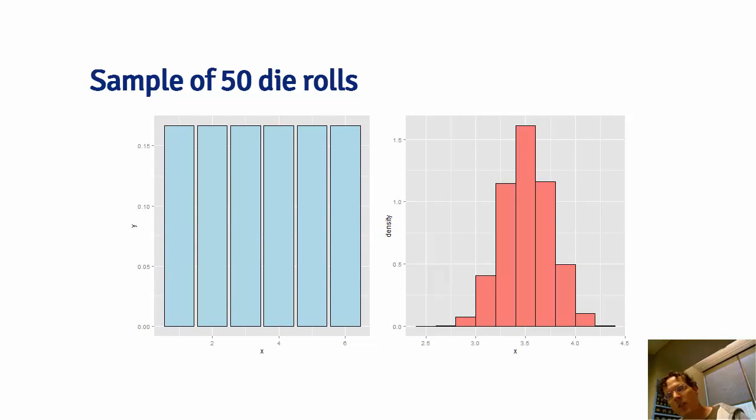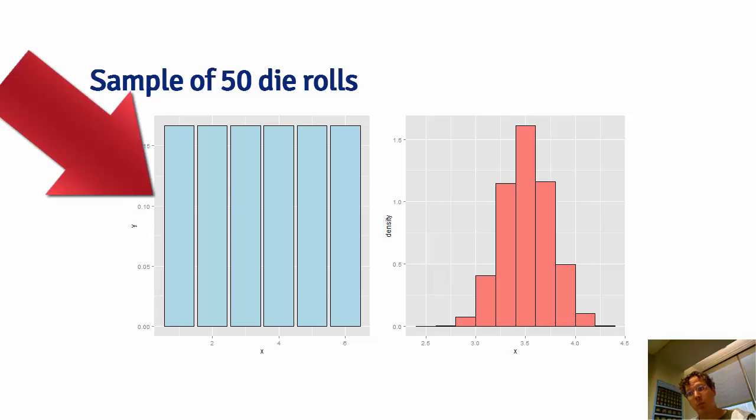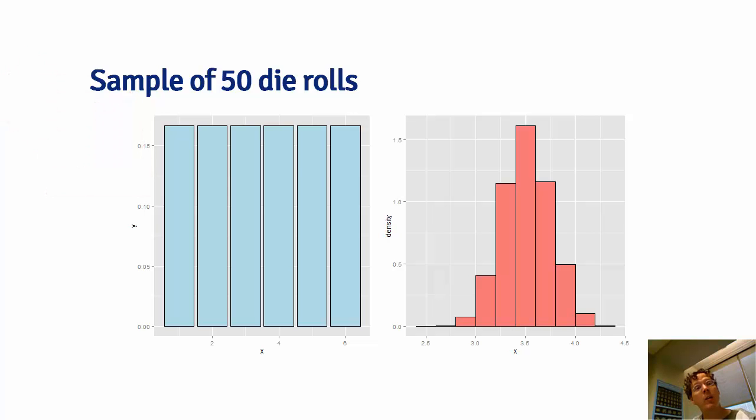Consider this example. Imagine if we wanted to evaluate the behavior of the average of 50 die rolls. Our population distribution is this left-hand distribution, the equally weighted bars with the values 1 through 6. There's a couple of ways we might go about doing that. One is we could just try and mathematically figure out what the distribution of the average of 50 die rolls is, with no simulation, just doing the relevant algebraic calculations.